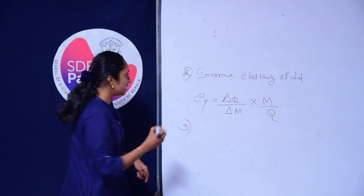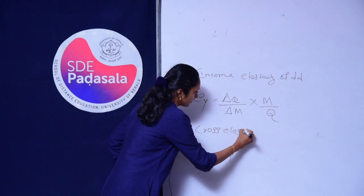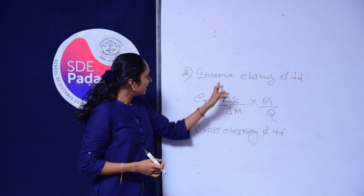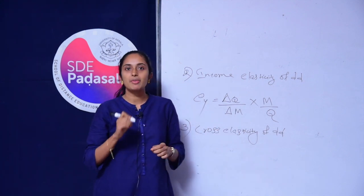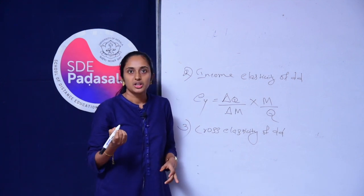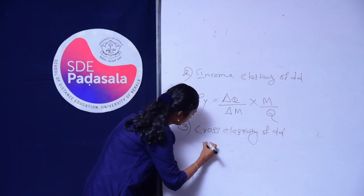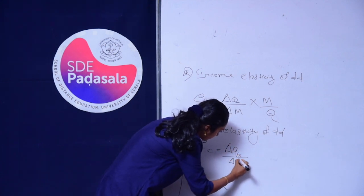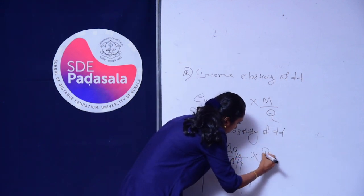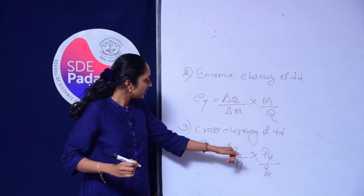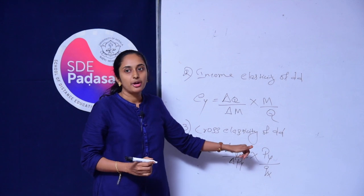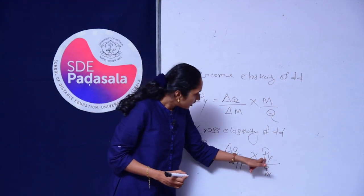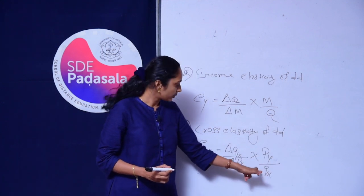Next is Cross Elasticity of Demand. Cross Elasticity of Demand measures the responsiveness of quantity demanded of a good to a change in the price of other goods. The formula can be written as: (delta Q_X / delta P_Y) × (P_Y / Q_X). Here, delta Q_X represents the change in quantity demanded of the first good X, delta P_Y represents the change in price of the second good Y, P_Y represents the price of good Y, and Q_X represents the quantity of good X.